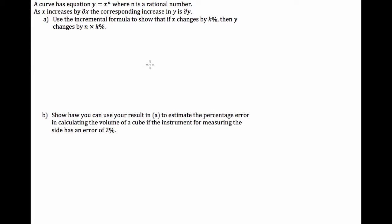We're going to try and get through this video as quickly as possible because it's starting to heat up where I am and I really want to go for a skateboard. So what have we got today? A curve has equation y equals x to the power of n where n is a rational number. As x increases by delta x, the corresponding increase in y is delta y. Use the incremental formula to show that if x changes by k percent, then y changes by n times k percent.